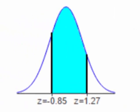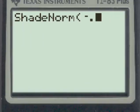In the shade normal command, we'll first put the smaller of the two z-scores, which is negative 0.85, then a comma, and then the larger of the two z-scores, 1.27.